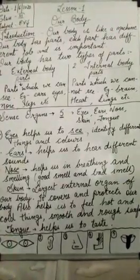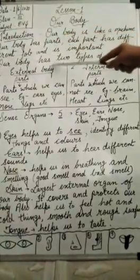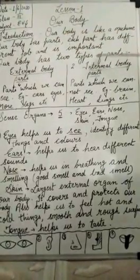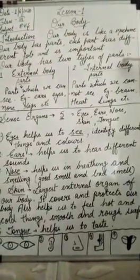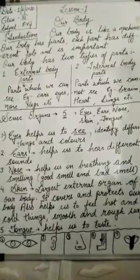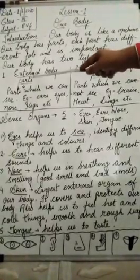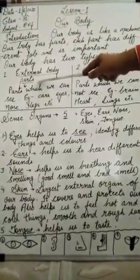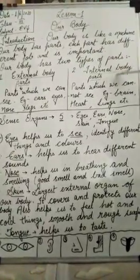Ab hum aage padhenge — our body has two types of parts. Humari body ke do tarah ke parts hote hain. Number one: external body parts. And number two: internal body parts.